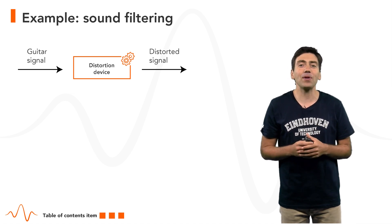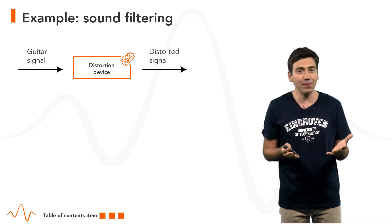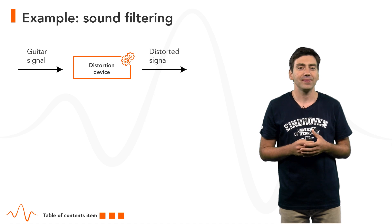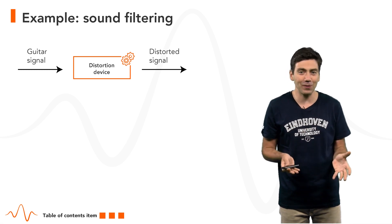Yet another example are distortion devices for sound processing. Given an input signal, with convolution we can compute the output signal for different distortion effects.